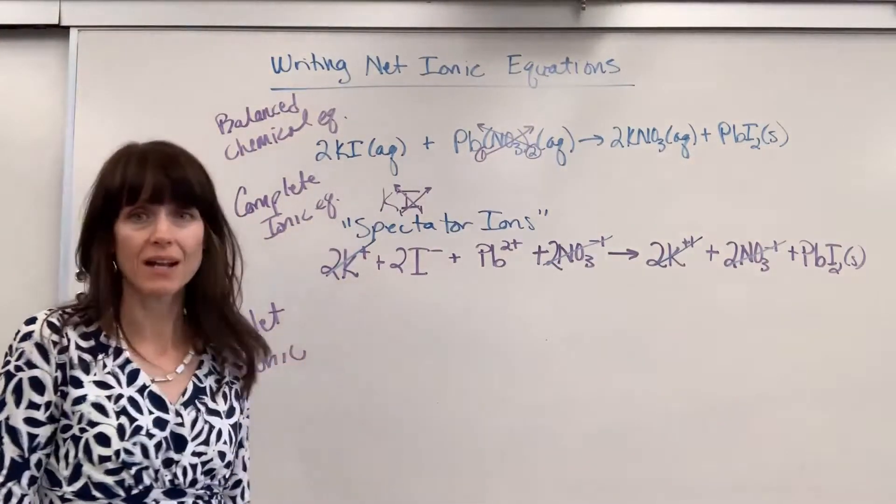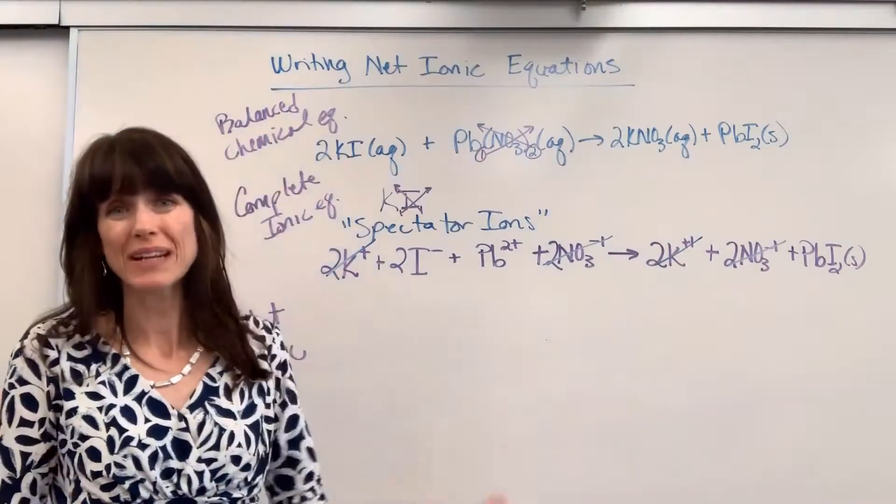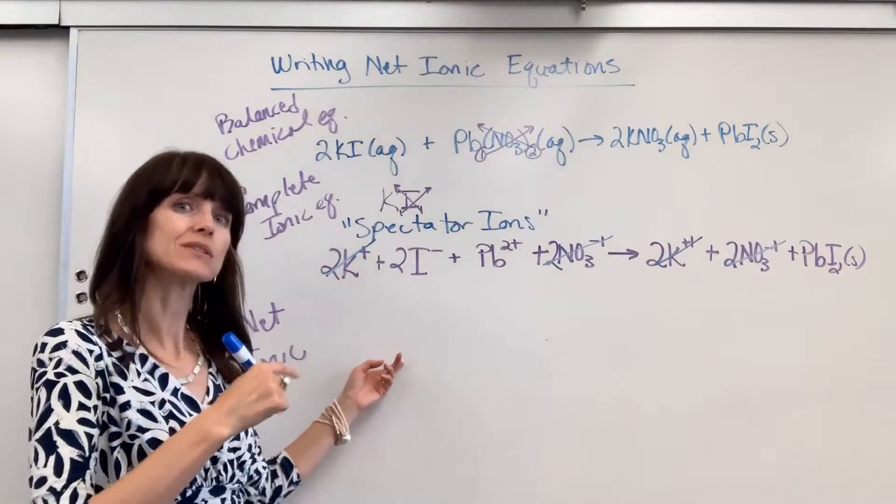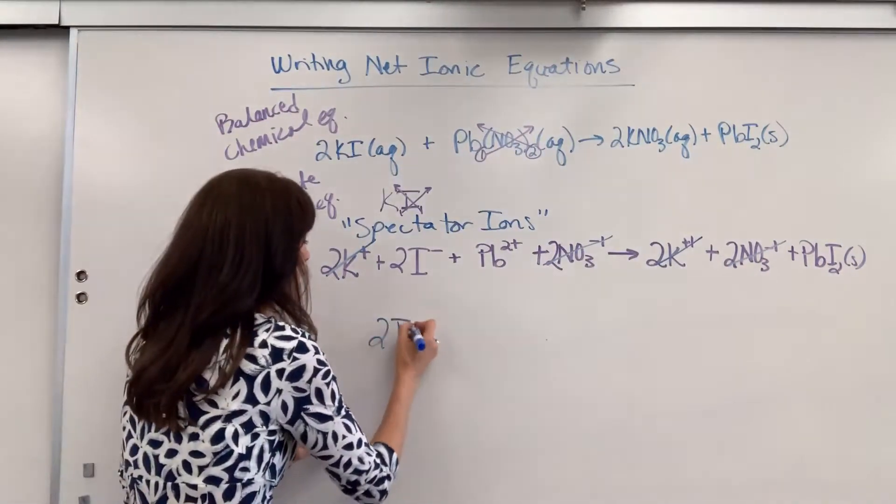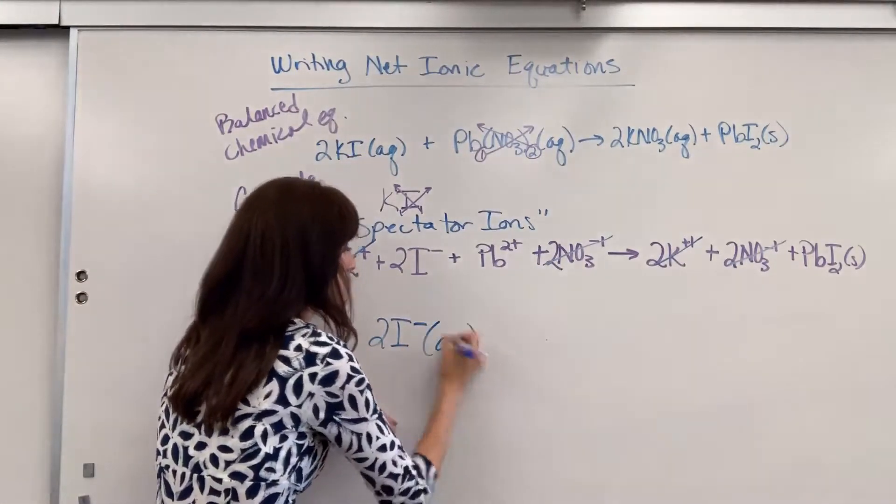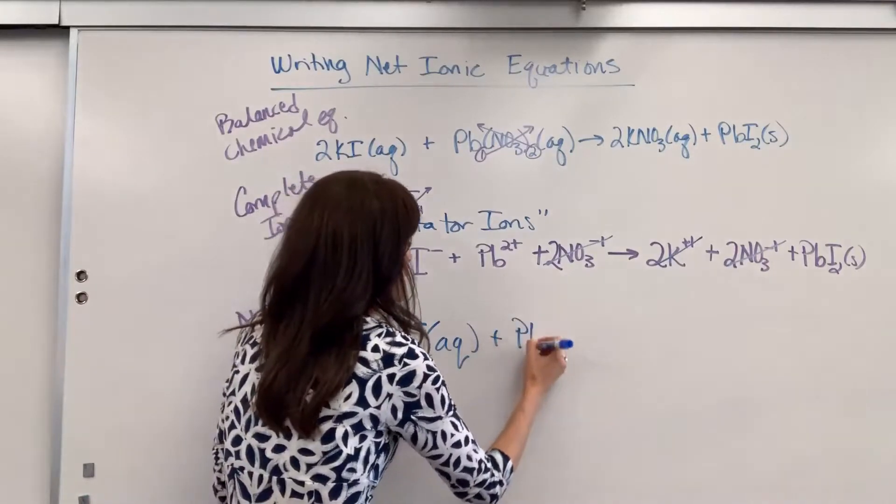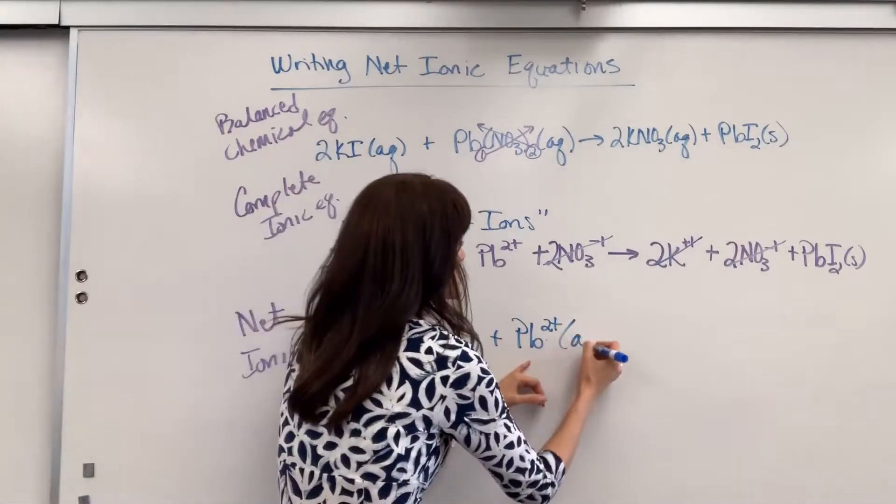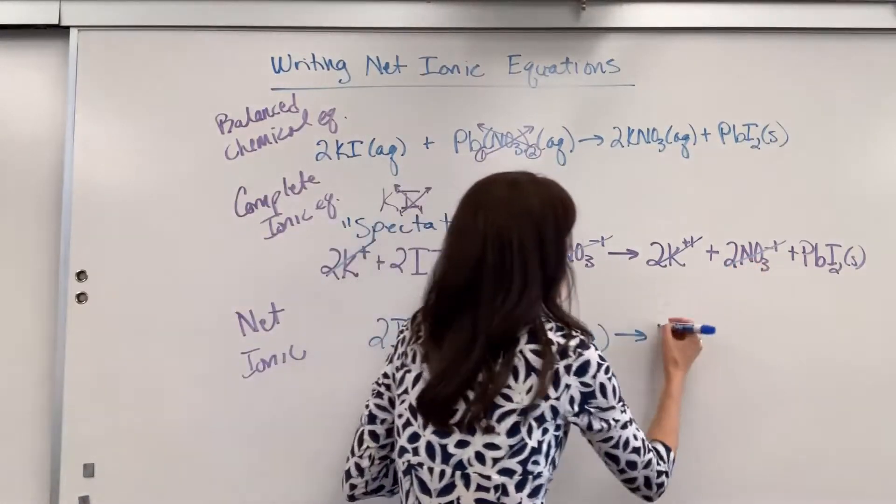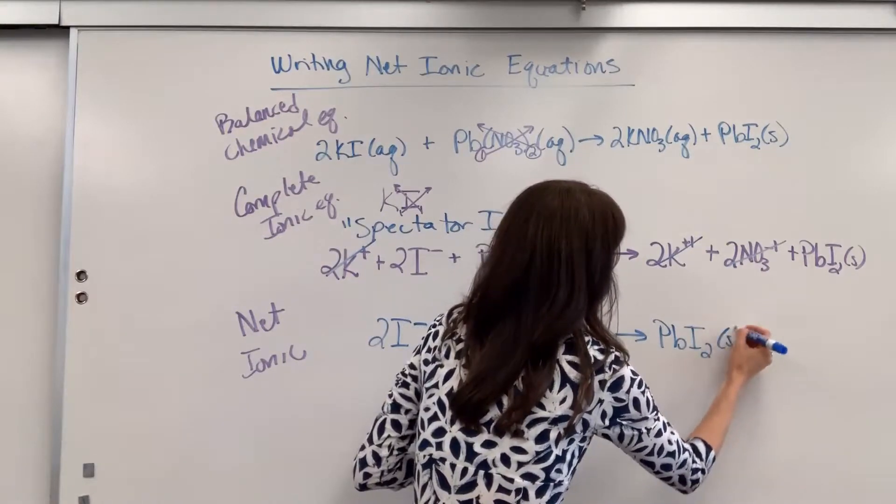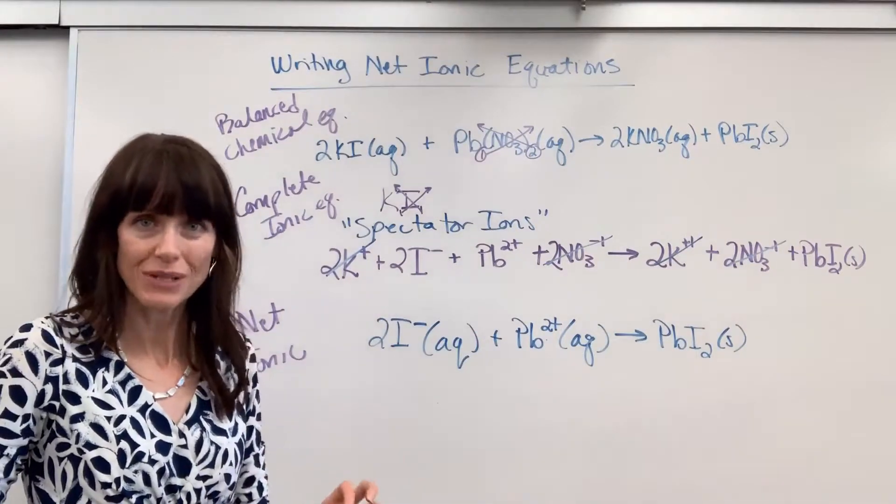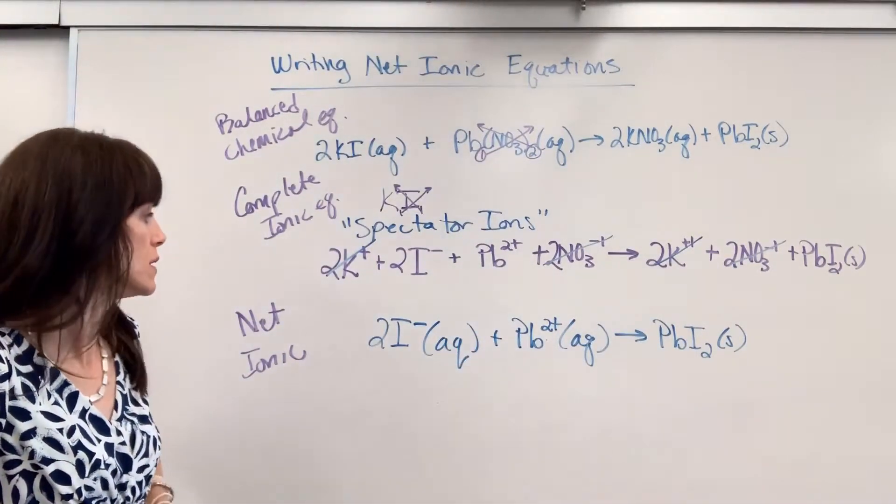Then super easy for the net ionic. After you cancel spectator ions, you just write down what's left over. Here's what we have. And at this point, I have my students go back and add their phases. I have two iodide. That came from potassium iodide. It's aqueous. It's floating in the water. Plus a lead two, also aqueous, yields my lead two iodide solid. And this shows which species are actually doing chemistry that are involved in the chemical reaction.